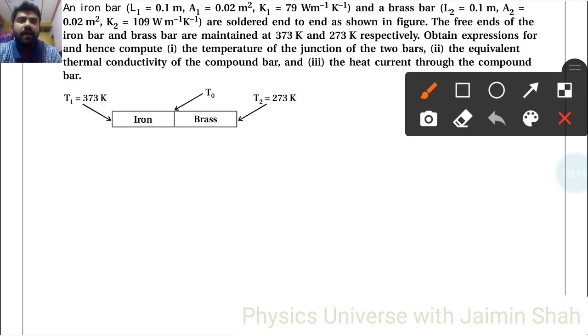So T1, that is our T1, and T2 is 273 Kelvin respectively. Obtain the expression for and hence compute the temperature of the junction of the two bars. So first of all they are connected with each other.